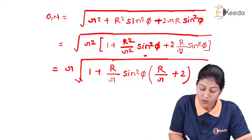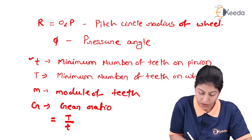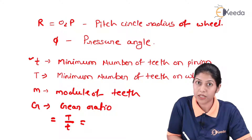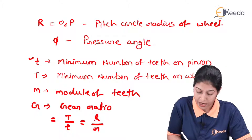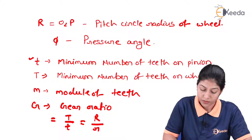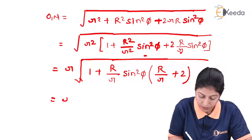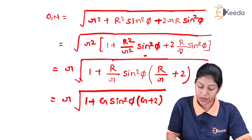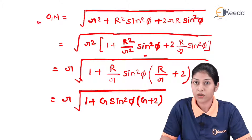The ratio R/r can be defined as the gear ratio g, since it equals T/t or equivalently the ratio of pitch circle radii or diameters. Substituting g in place of R/r, the equation becomes: O1N = r·√(1 + g·sin²φ·(g + 2)), which represents the maximum radius of the addendum circle of the pinion.